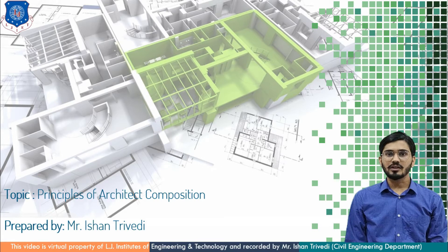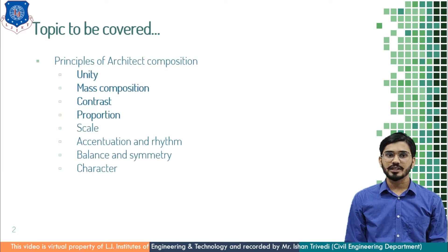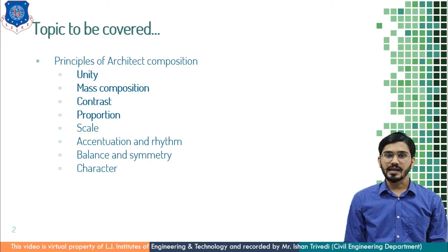Today I am going to discuss the principle of architectural composition. In this topic, I will cover unity, mass composition, and contrast — which is further classified as contrast of form, size, tone, and line. Furthermore, there is proportion, scale, accentuation and rhythm, balance and symmetry, and character — classified as functional, associate, and personal character. In this session, I will cover unity, mass composition, contrast, and proportion.